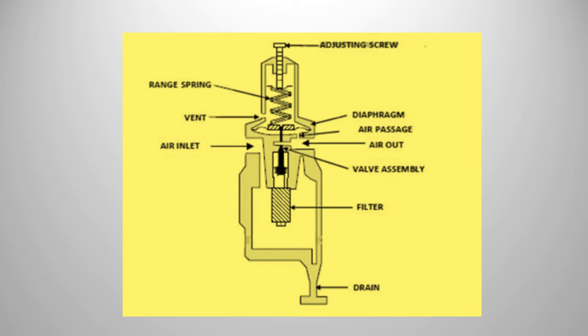At the very top of the air filter regulator there is an adjusting screw to control or regulate the air supply to the process. These are the components of the air filter regulator.